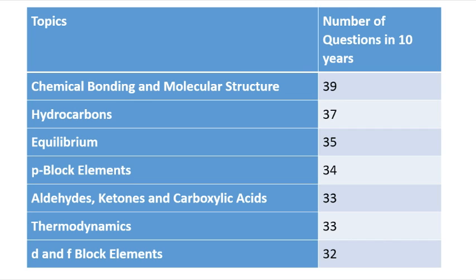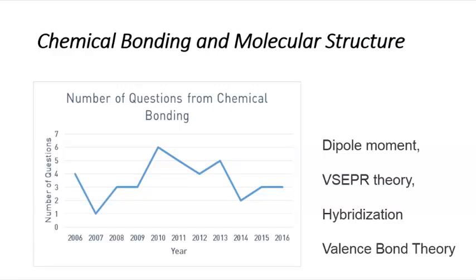Next we will see different topics ranked based on the number of questions asked cumulatively over the last 10 years. First is chemical bonding and molecular structure, ranked number one with 39 cumulative questions. Hydrocarbons has 37 questions, equilibrium 35 questions, p-block elements 34 questions, aldehydes and carboxylic acids together around 33 questions, and d and f block elements around 32 questions.